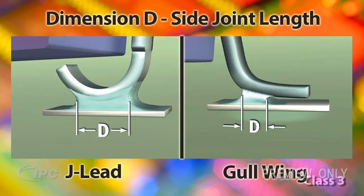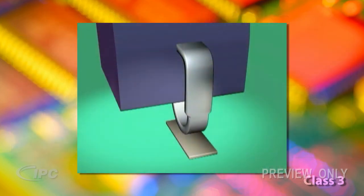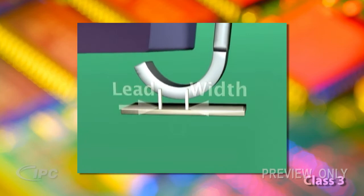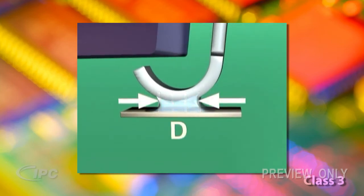Of the specific components we are studying in this video, side joint length, or Dimension D, only relates to J-lead and Gullwing components. The side joint length of the J-lead solder joint at its narrowest point should be a minimum of one and one half times, or 150% of the width of the lead.